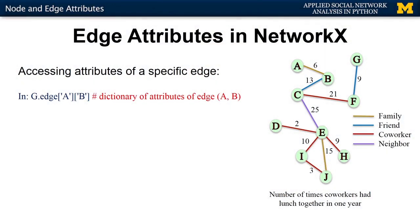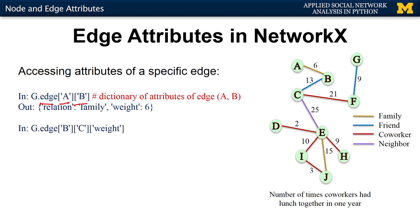What if you wanted to access the attributes of a specific edge rather than getting the full list? You can do that by using `edge` rather than `edges`, specifying which edge you want by providing the two endpoint nodes. This returns a dictionary containing each one of the attributes of that edge. You can also specify which particular attribute you're interested in.